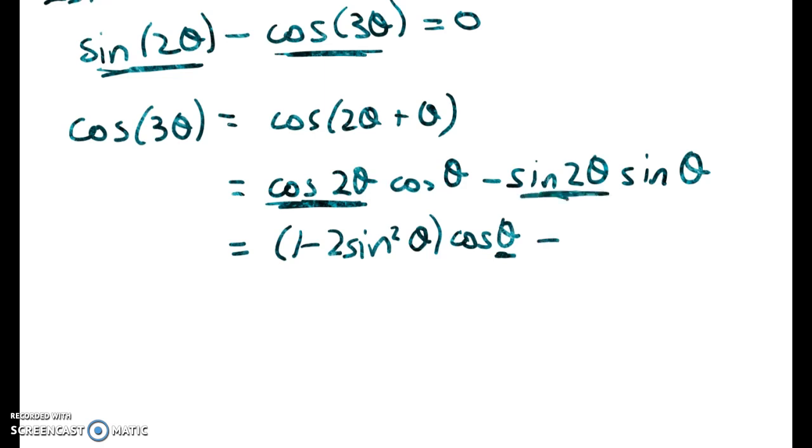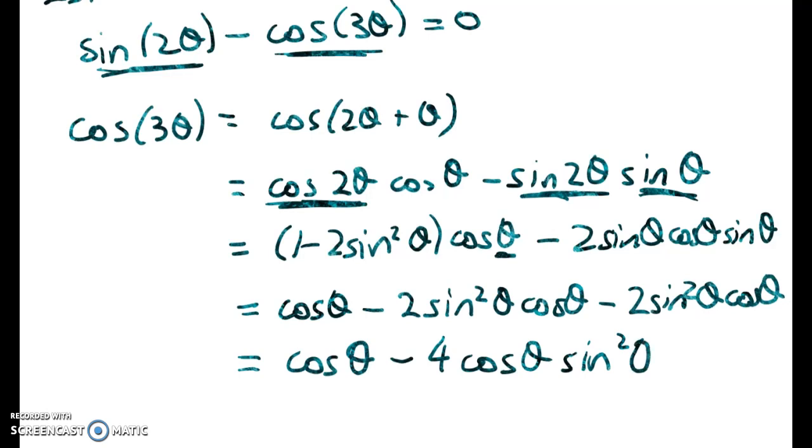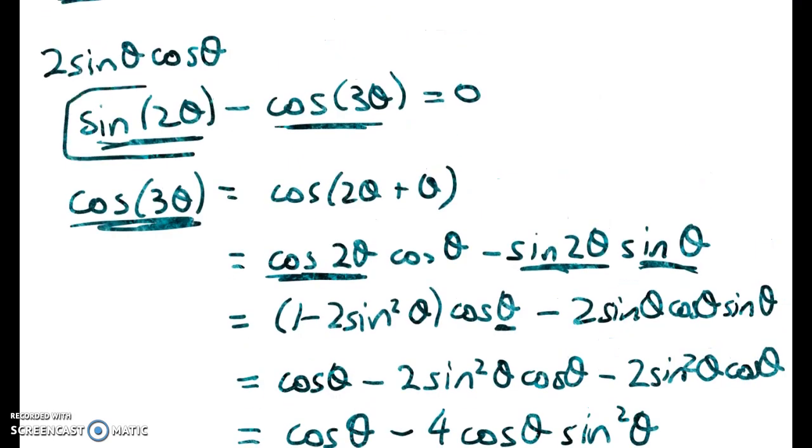My goal, remember, is to end up with no compound angles anywhere in my problem. So here the sine 2θ is going to be minus 2 sine θ cos θ times this. So we've got cos θ minus 2 sine squared θ cos θ minus 2 sine squared θ cos θ. That equals cos θ minus 4 cos θ sine squared θ. Now, the only reason we figured this thing out was to chuck it back into this equation here.